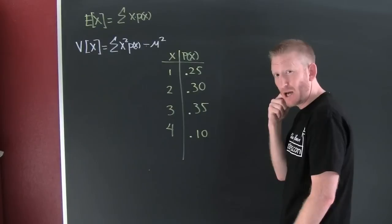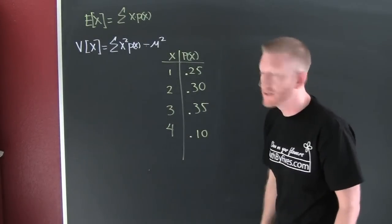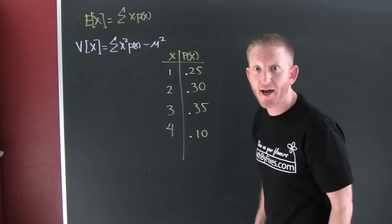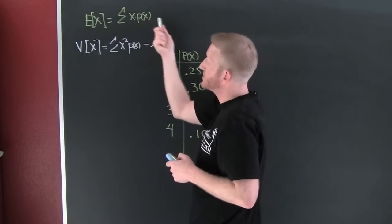Okay! It's the one that we saw in our last example when we were finding the expected value, or the mean mu, of this discrete probability distribution. So I'm up here. We saw that our expected value was the sum of x times p of x.